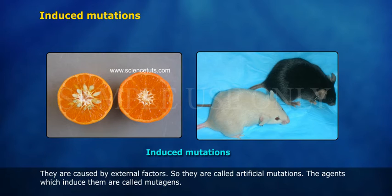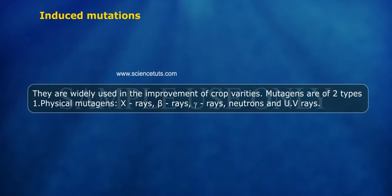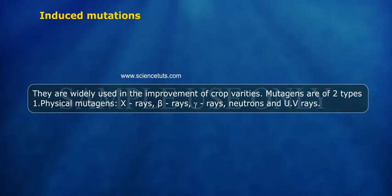Induced mutations are caused by external factors, so they are called artificial mutations. The agents which induce them are called mutagens. They are widely used in the improvement of crop varieties. Mutagens are of two types.